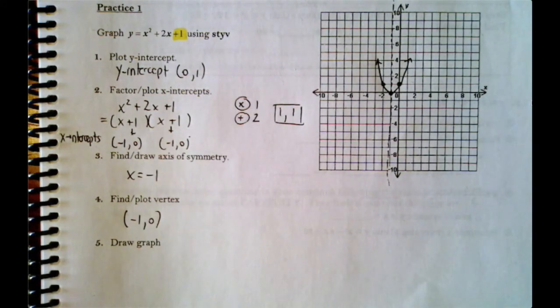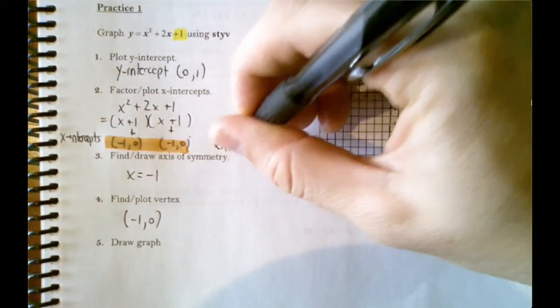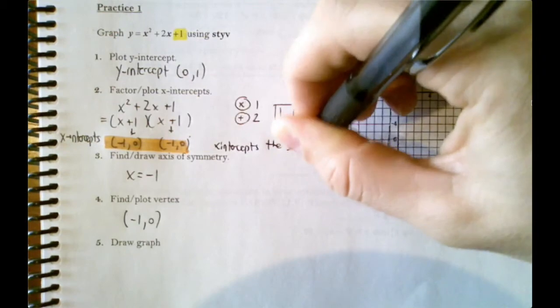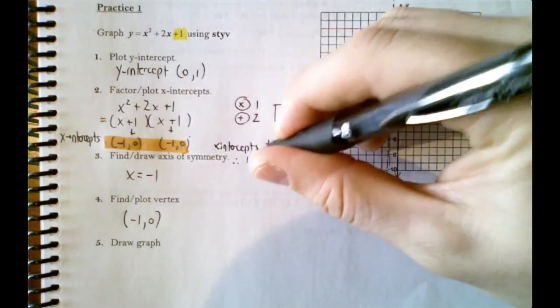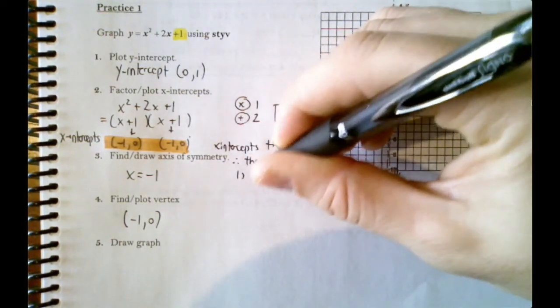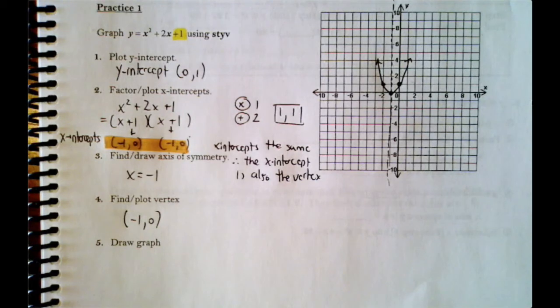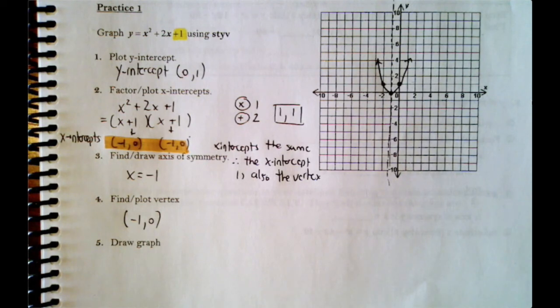This is a special case to remember: if your two x-intercepts are the same, then that x-intercept is also the vertex, making it a very easy graph to draw since we only need three points. That was lesson 5.3 — graphing using the STYV method. Next lesson we'll do another version of the STYV method. Thanks for watching!